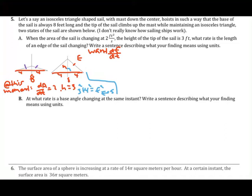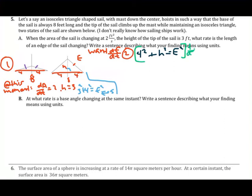Using the Pythagorean theorem as a general formula: 4 squared plus H squared equals E squared. Four is constant since the base doesn't change, but H and E are variables because they change over time. Differentiating with respect to t gives: 0 plus 2H dH/dt equals 2E dE/dt. Plugging in known values, we notice we have two unknowns and can't yet solve for dE/dt — we need to find dH/dt first.